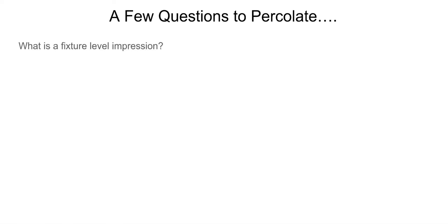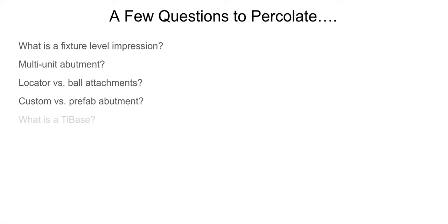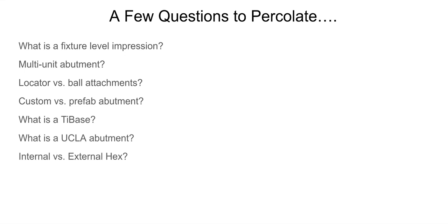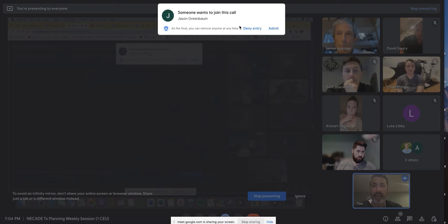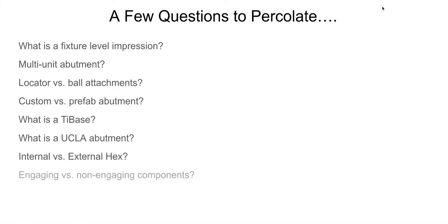A few questions to percolate — if you're doing implant prosthetics, you should know the answers to these: What is a fixture level impression? What's a multi-unit abutment? Do I choose a locator or ball attachments for an overdenture? Should I use a custom or prefab abutment? What is a tie base? What's a UCLA abutment? What is the internal versus external hex? Engaging versus non-engaging components. These are basic questions I got stuck on early in my career and I've seen other young clinicians get stuck on. We're going to cover most of this and quite a bit more.